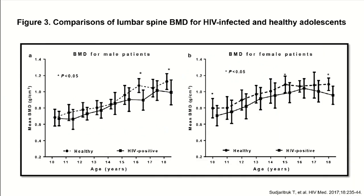This figure shows the result of one of my studies comparing bone mineral density among HIV-infected youth to their HIV-uninfected peers of the same age and sex. The bone mineral density for HIV-infected individuals is shown in the solid line and for HIV-uninfected individuals in the dotted line. You can see very clearly that bone mineral density among HIV-infected youth is lower compared to their age- and sex-matched HIV-uninfected peers.